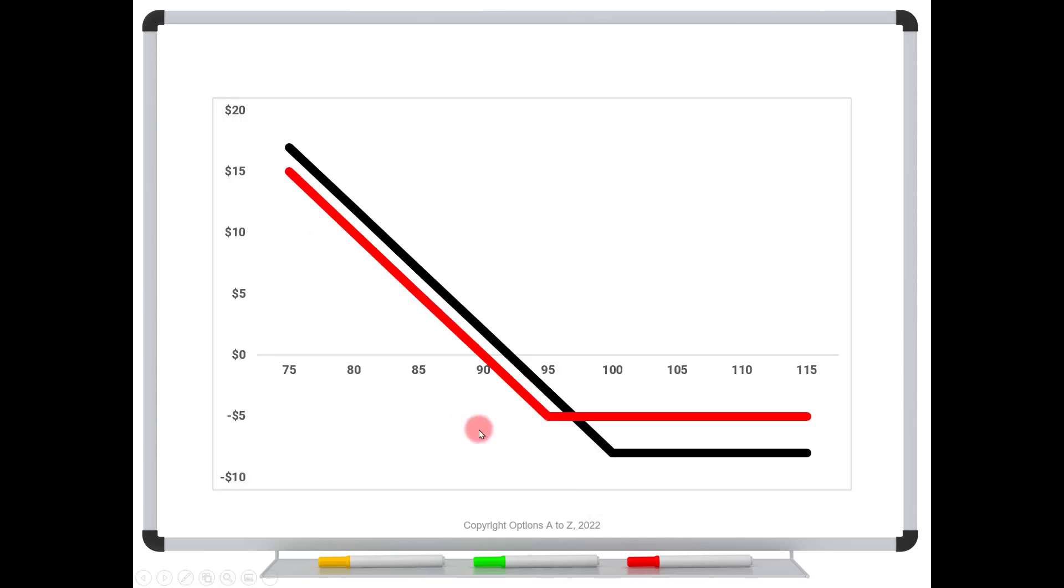So what happens is your risk graph went from this in black. Here's our max loss at eight with our bend at a hundred, and we've now shifted up to this in red. We now have a bend at 95, we're long the 95 put, we still have unlimited downside, but we've managed the risk down here. Now my maximum loss is five. See how this red line lines up right there at minus five. We used to line up here at minus eight. So this is a risk management technique.